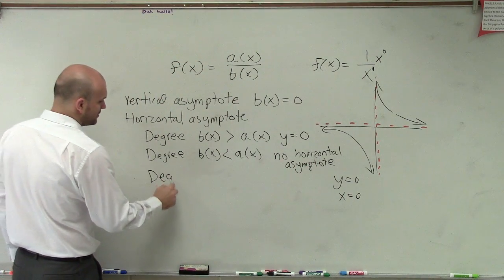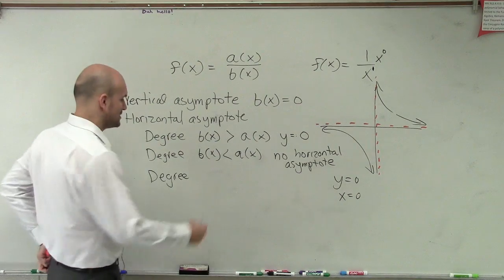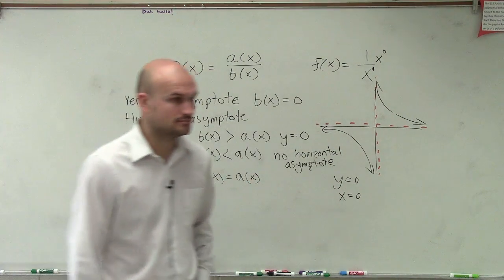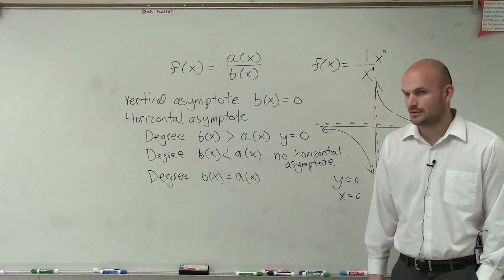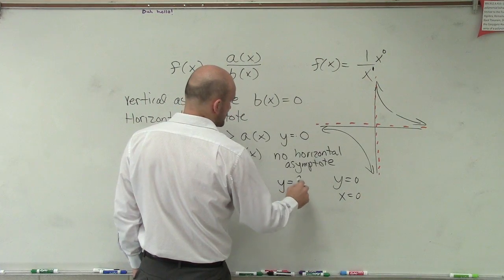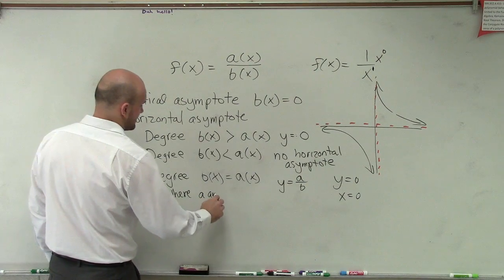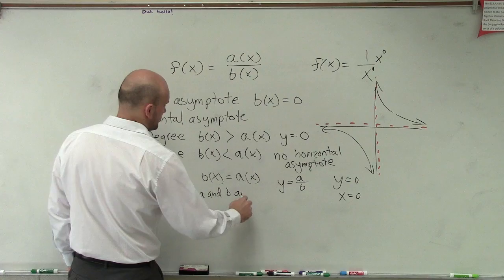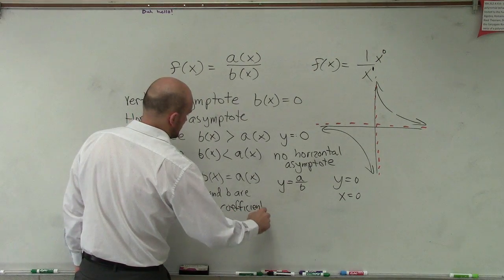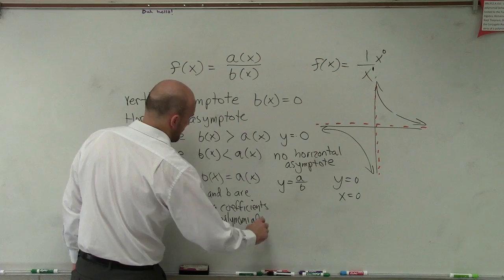The last case is when the degrees are equal — when the degree of b of x equals the degree of a of x. Then our horizontal asymptote is going to be y equals a over b, where a and b are the leading coefficients of their respective polynomials.